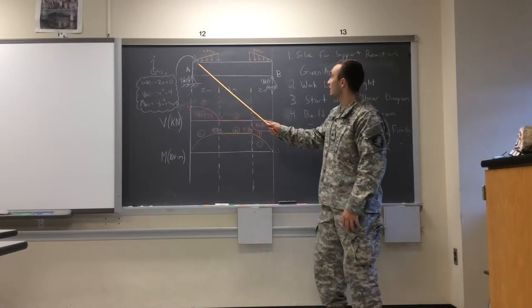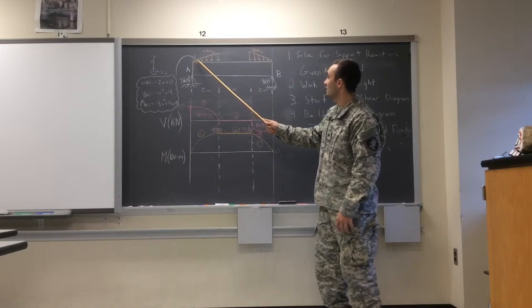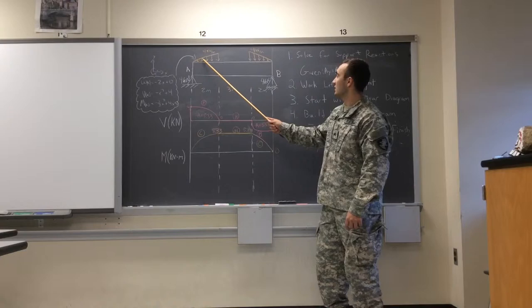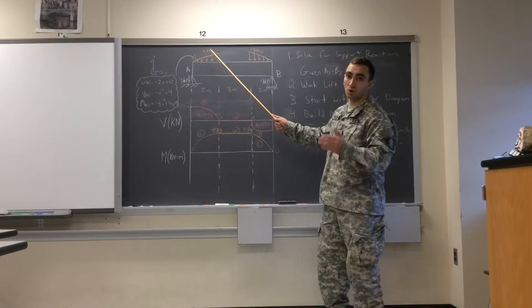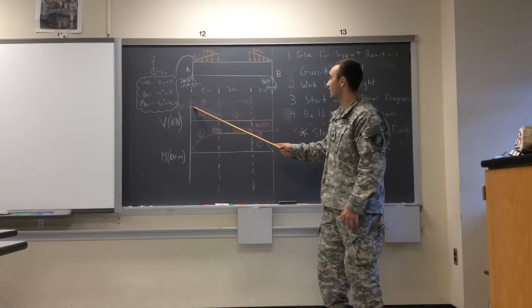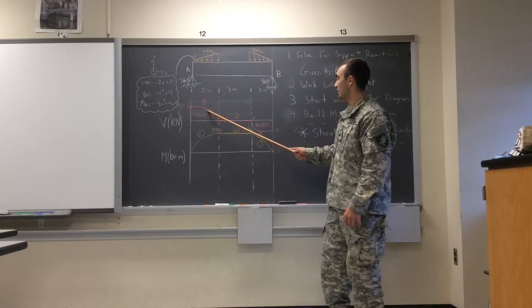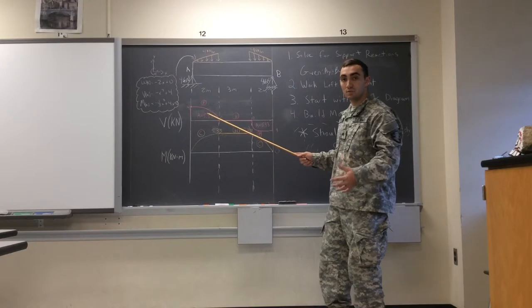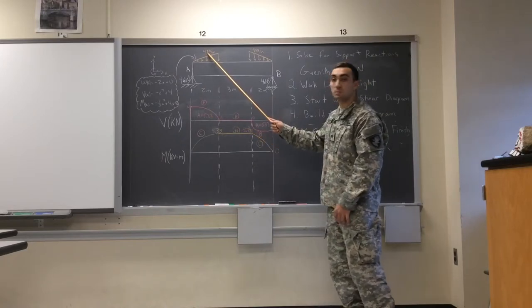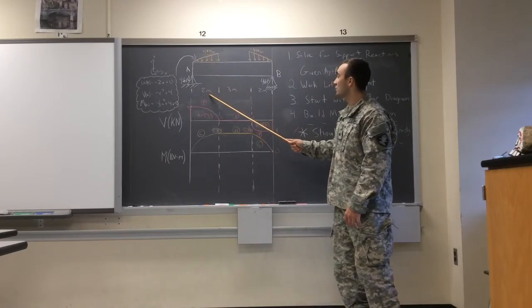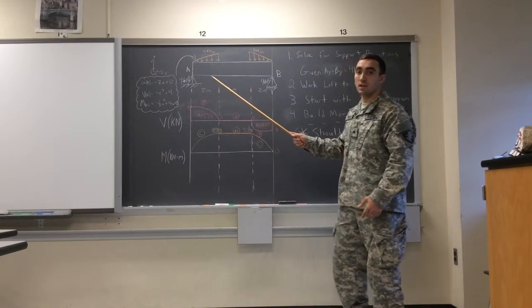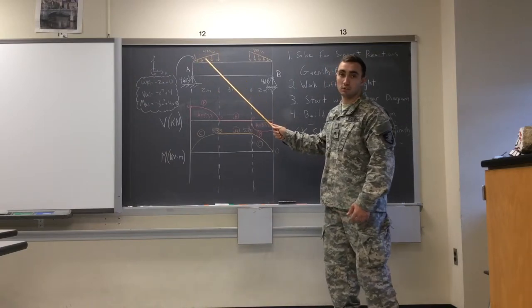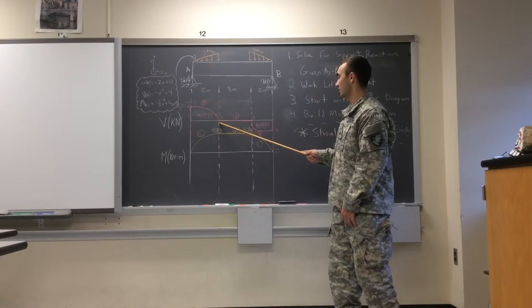Because what it's doing is it's slowly working against this support reaction right here. And then, after that, it's increasing, working against it more and more and more. That's why you're going to get concave down. See how it does that? It slowly increases back down to zero. How you get to zero is you take the four kilonewtons per meter, working over two meters, which would be eight kilonewtons. And then, you're going to take half of that because it's a triangle instead of the rectangular load. So, that's how you get four kilonewtons to get back down to zero.